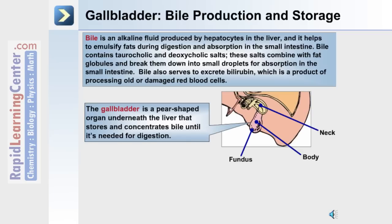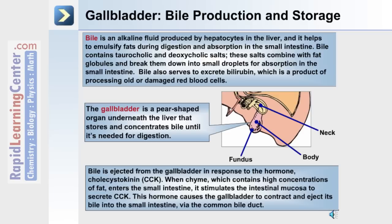The gallbladder is made up of a fundus, a body, and a neck. It's a pear-shaped organ underneath the liver. Bile is ejected from the gallbladder in response to the hormone CCK, or cholecystokinin. When chyme containing high concentrations of fat enters the small intestine, it stimulates the intestinal mucosa to secrete CCK. CCK then causes the gallbladder to contract and eject its bile through the common bile duct into the small intestine.